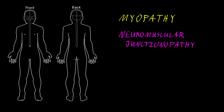With neuromuscular junctionopathy, there's diffuse dysfunction of the neuromuscular junctions — all or many of the neuromuscular junctions are abnormal. People will often just use longer phrases like disorders of the neuromuscular junction or diffuse dysfunction of the neuromuscular junctions.